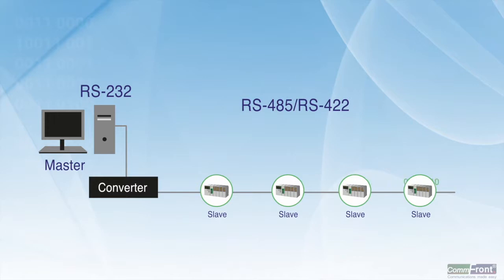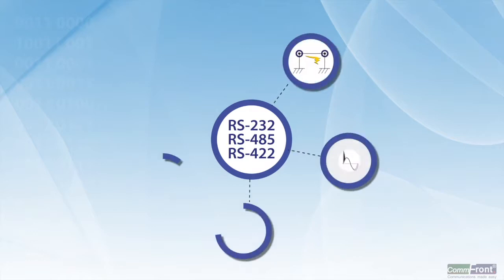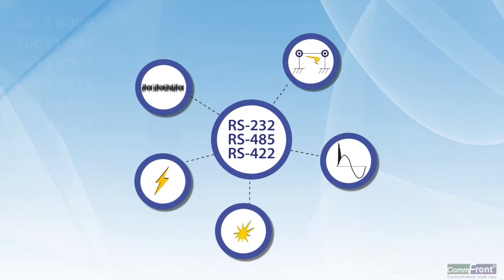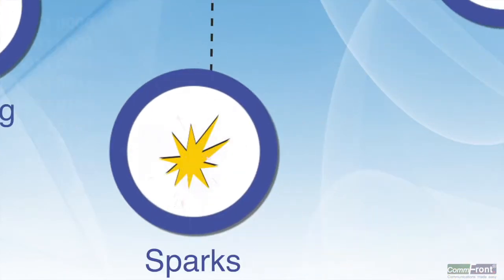it also introduces two major challenges. First, because of the long distances and the surrounding electrical devices, RS-485-RS-422 networks are often exposed to electrical noises, remote lightning, sparks, and voltage surges.